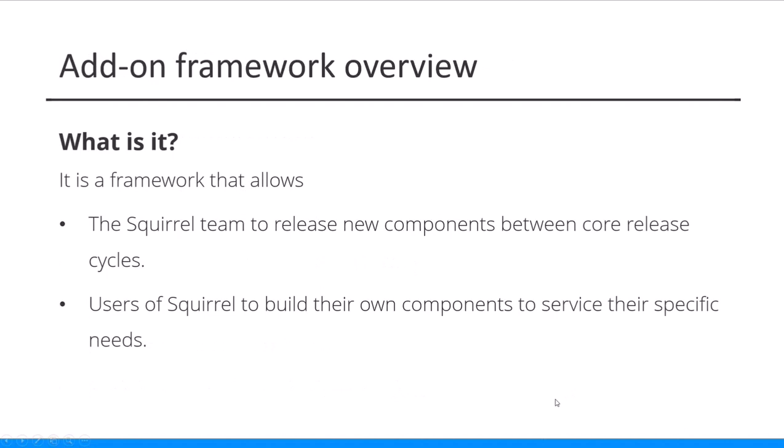The add-on framework — what is it? It's a framework that allows the Squirrel team to release new components between our core release cycles. We're releasing roughly quarterly, and this allows us to get new components into people's hands a lot quicker. We can build them in an isolated way, test them, and then get them out. Also, if some customers need something fairly niche that's not suitable for the wider Squirrel community, we can build something and give it to them as a private add-on. We'll discuss the differences between private and public add-ons a bit later on. And now that we're releasing this framework out into the wild, we're hoping users will be able to build their own components to service their specific needs — either as a private or public add-on.